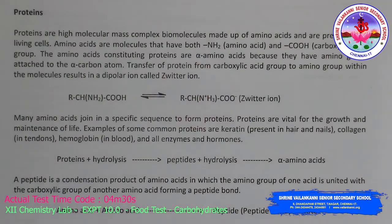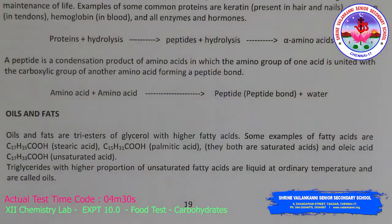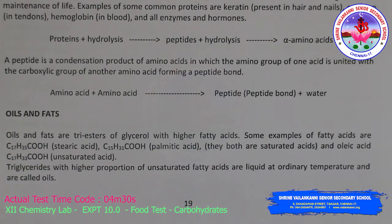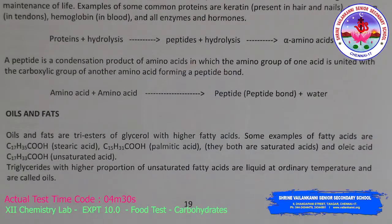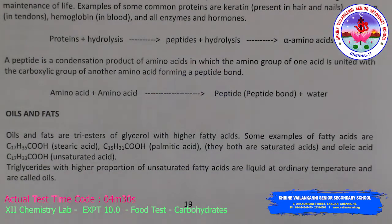Oils and fats are triesters of glycerol with higher fatty acids. Examples of fatty acids include stearic acid and palmitic acid, which are saturated (single bond) compounds, and oleic acid, which is an unsaturated acid containing a double bond. Triglycerides with a higher proportion of unsaturated fatty acids are liquid at ordinary temperature and are called oils.